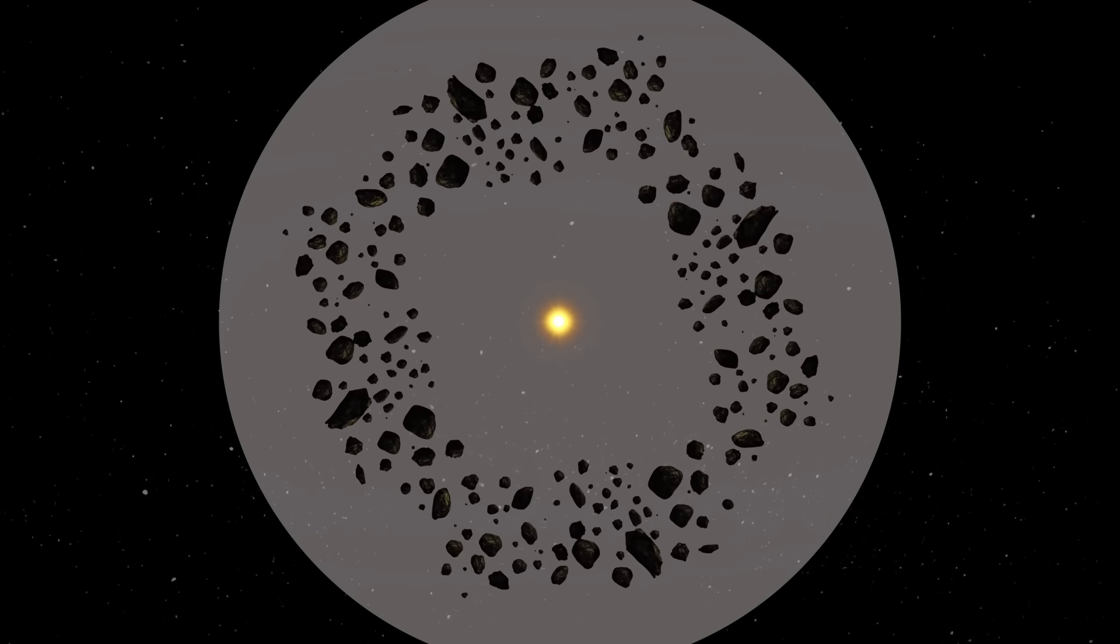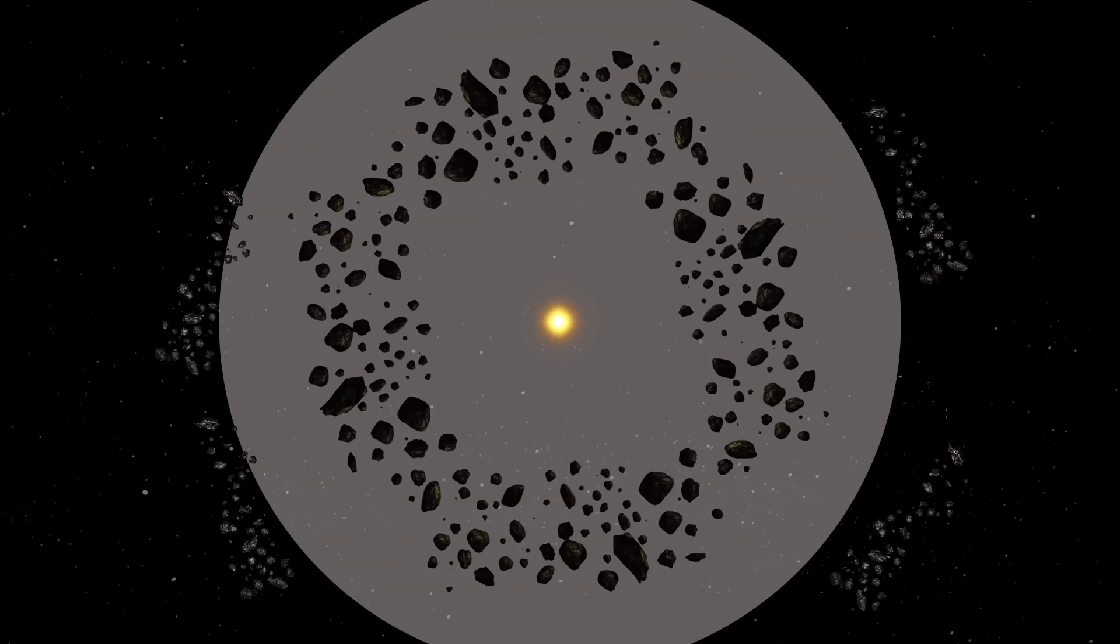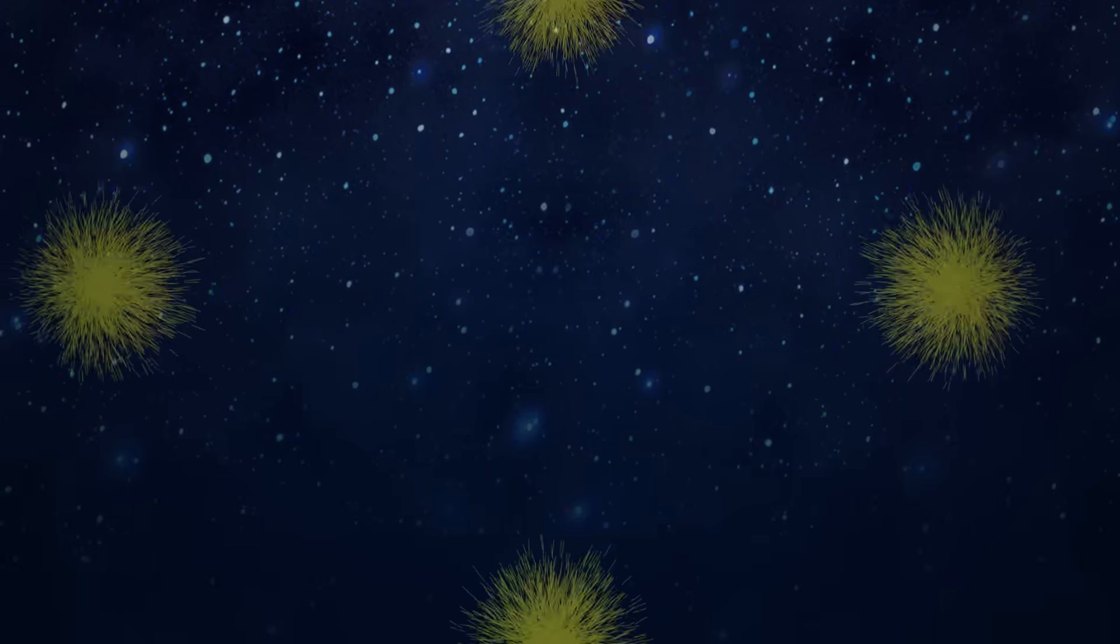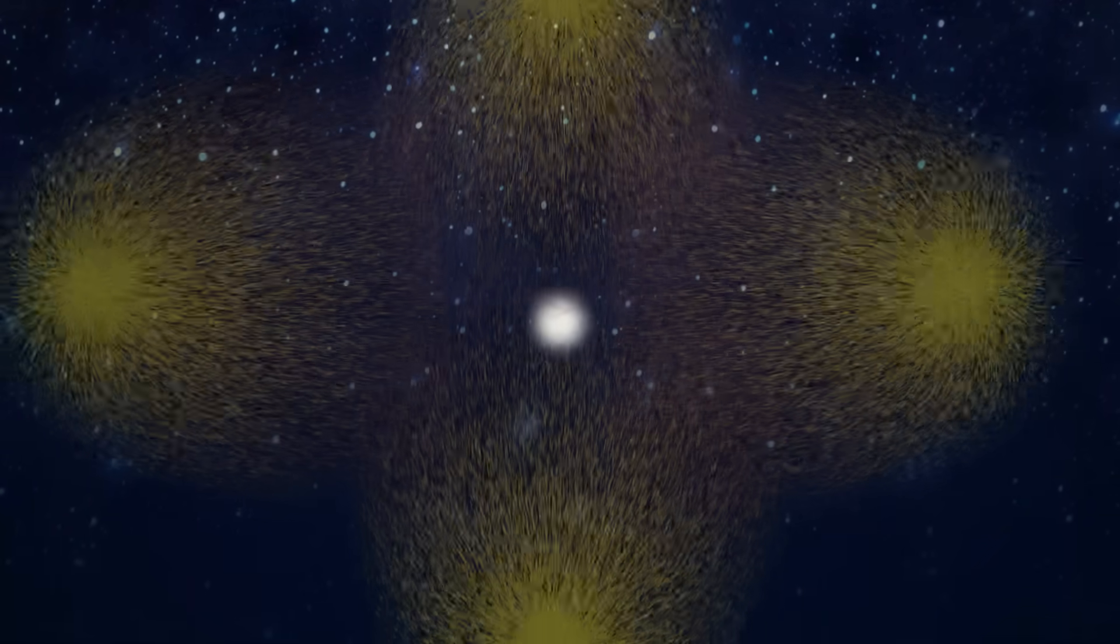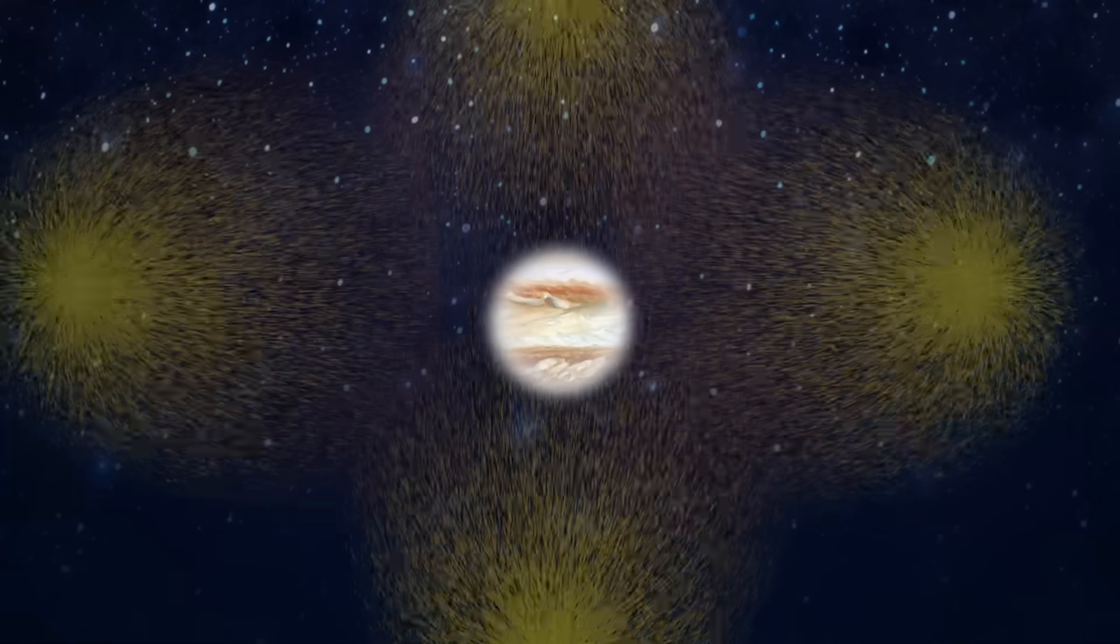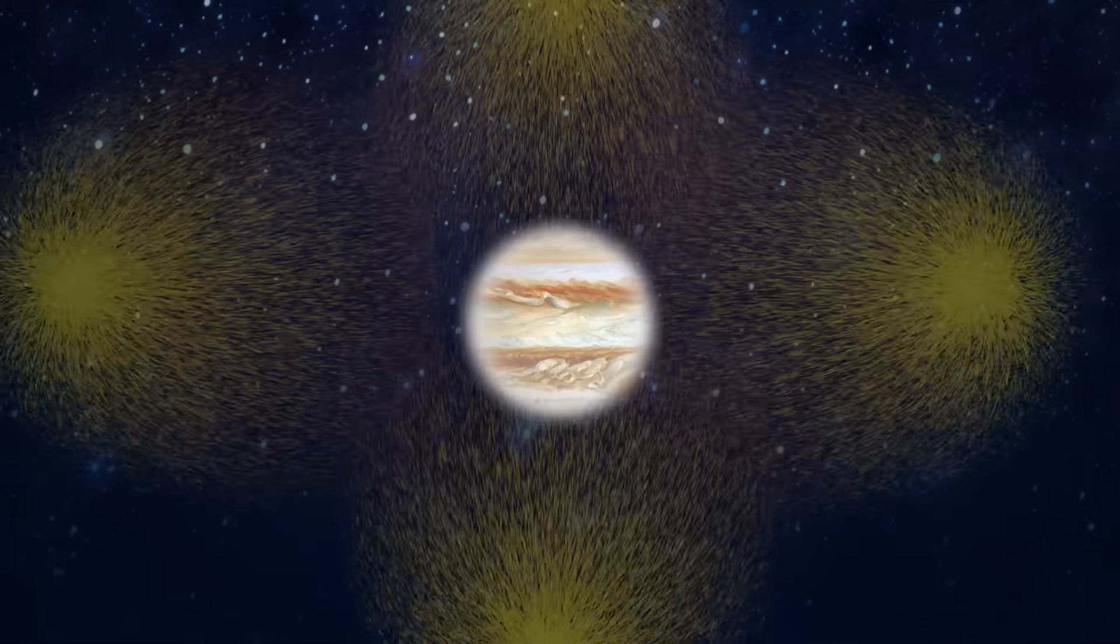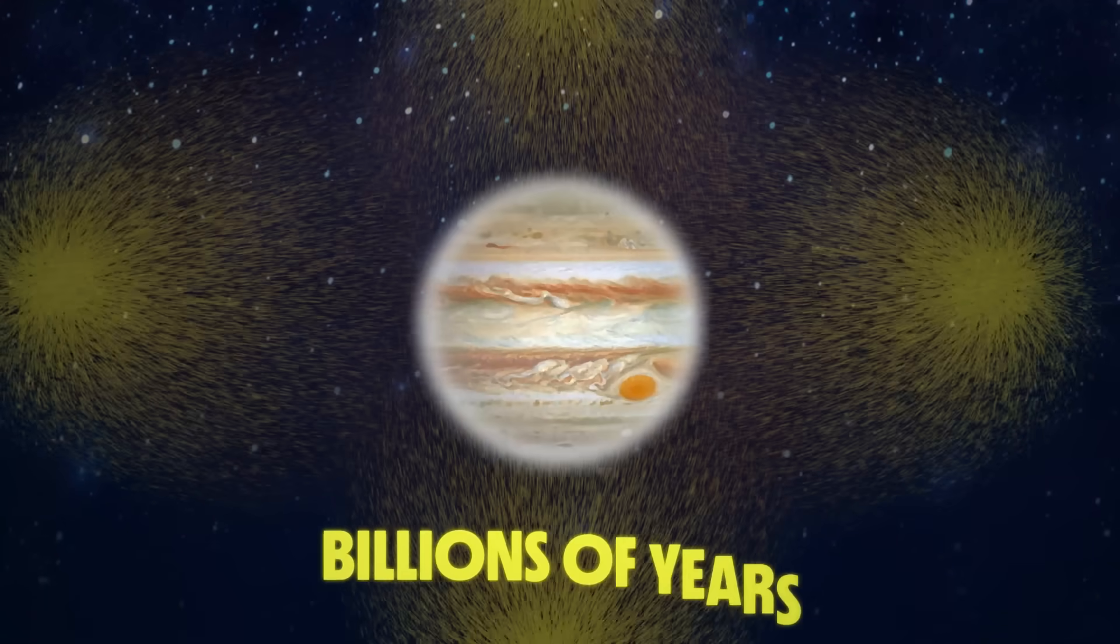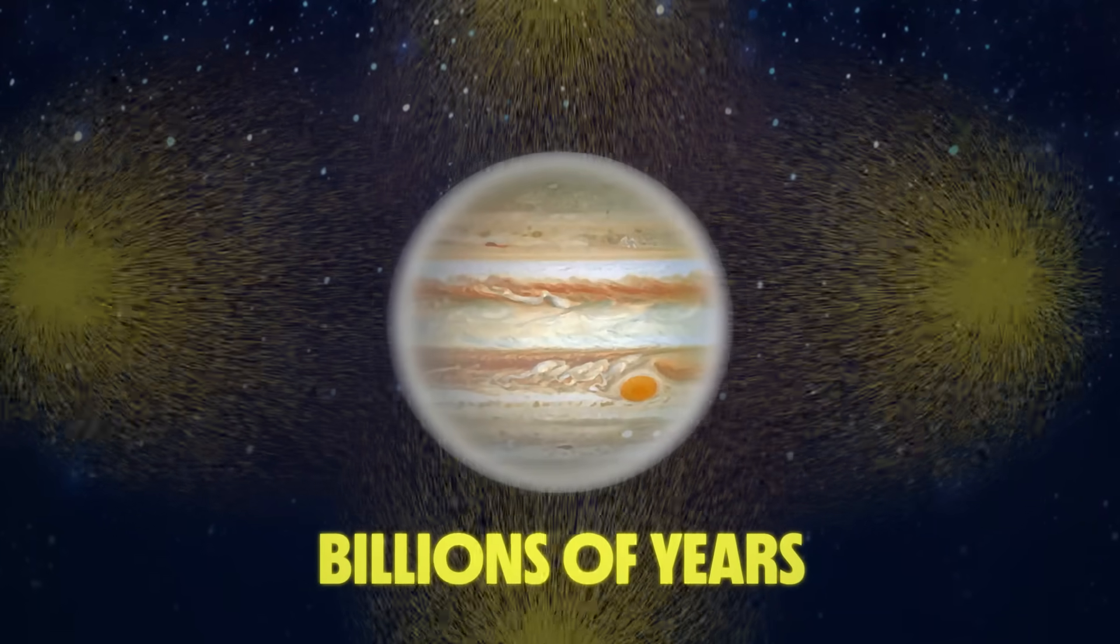And then, as those chunks get even bigger, gravity starts to kick in and attract even more stuff. So under that theory, Jupiter would have formed when one of those chunks got so big that its gravity started capturing massive amounts of gas that were swirling around inside the disk and just kept doing that for billions of years until it became what we see today.